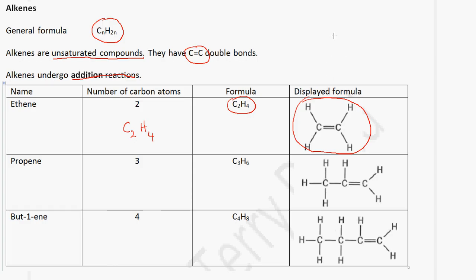Keep in mind that carbon can only form four bonds around itself. If you look at this carbon atom here, we have 1, 2, 3, 4 bonds. The next member of this group has three carbon atoms, so it will be C3H6. If you use the formula, it will be 3 multiplied by 2, which is 6. And this is the displayed formula.